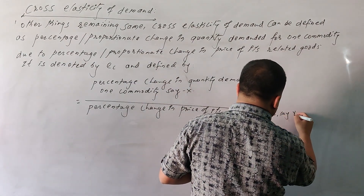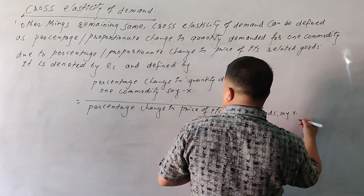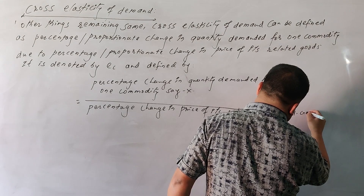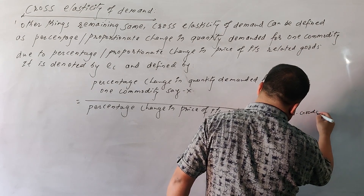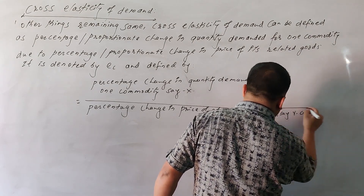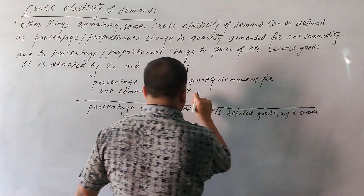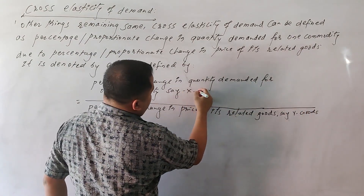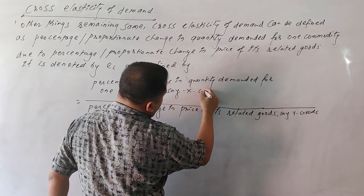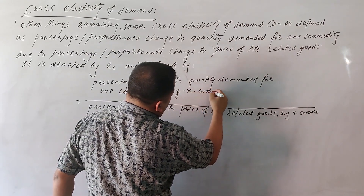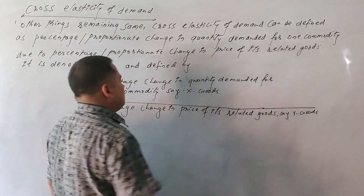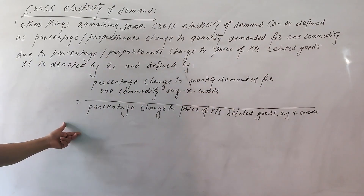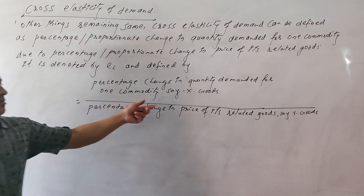The related goods are called Y goods, or Y commodity. The one commodity whose quantity demanded changes is called X goods, or X commodity.